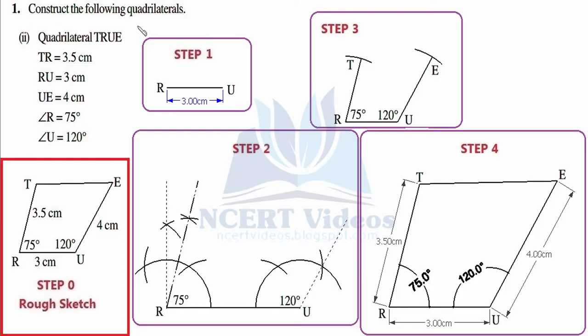We are on the second part of exercise 4.4, chapter 4, mathematics class 8 practical geometry. We need to construct a quadrilateral whose name should be TRUE. For a better understanding of this tutorial, you must watch the first part of this same question number first of exercise 4.4.